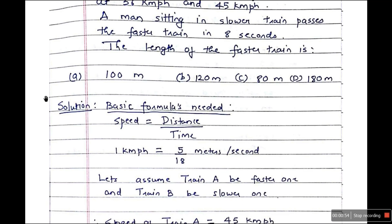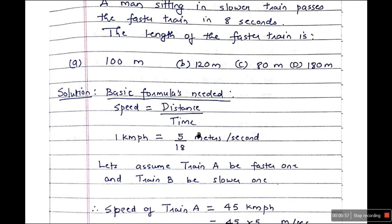Let's take a look at the solution. First we have the basic formulas. Speed is equal to distance upon time. The second basic formula we need is 1 km per hour is equal to 5/18 meters per second. 1 km means 1000 meters and 1 hour is equal to 3600 seconds. So when you keep 1000 divided by 3600, we get 5/18 meters per second. Most people will just tell you to use this 5/18, but they don't tell you how this 5/18 comes.